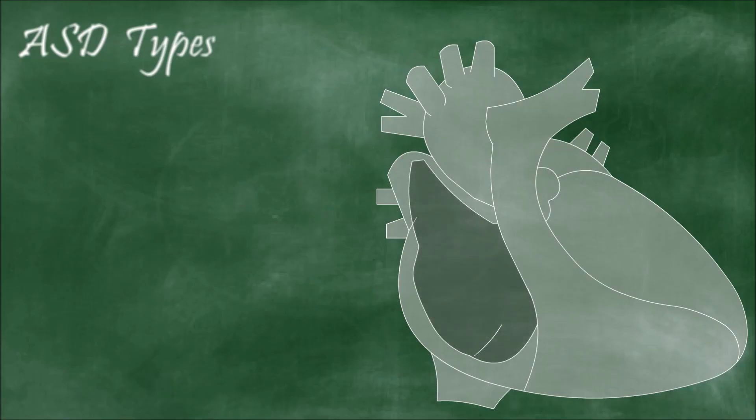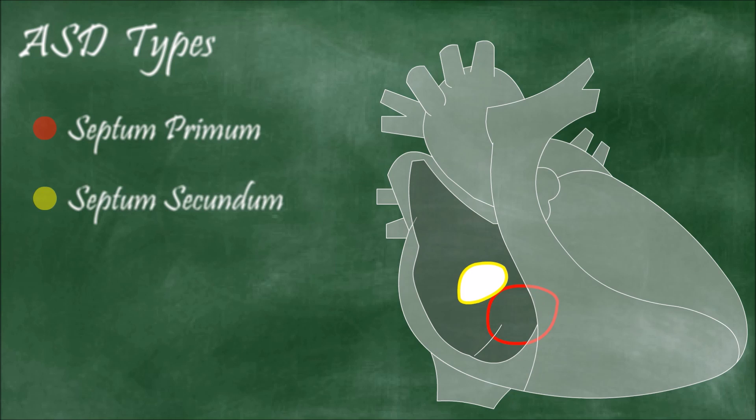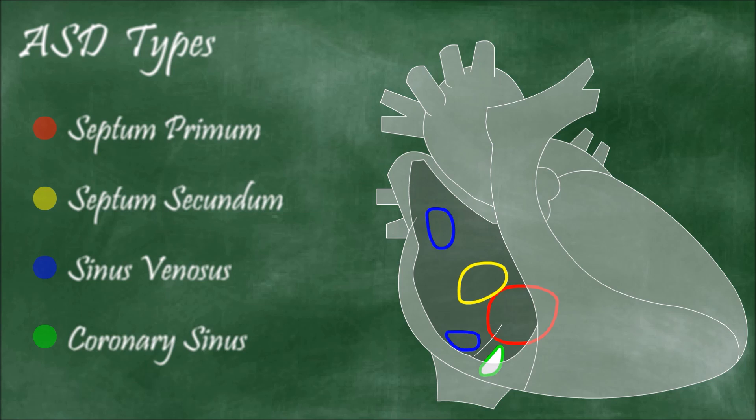As you know, there are different types of atrial septal defects: septum primum, septum secundum, sinus venosus, and coronary sinus. It is relevant to know and understand the difference between all of them because the prognosis and the treatment are not the same.